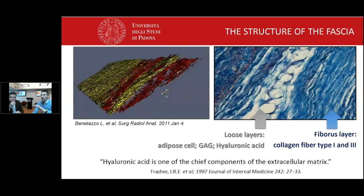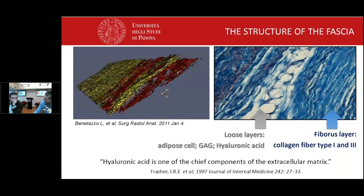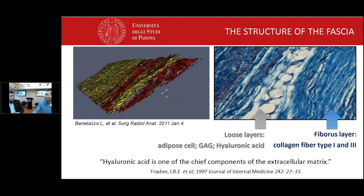We have different kinds of problems in the fascia. We have an alteration of the loose connective tissue, an alteration of the fibrotic tissue — collagen fiber type 1 and type 3. We will not spend much time about type 1 and type 3, as it is well known. But about densification — the increase of the loose connective tissue — this is new. I think it would be new for a lot of people.